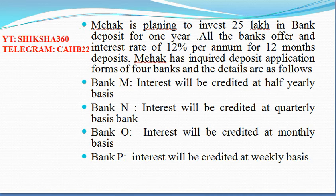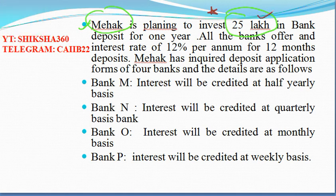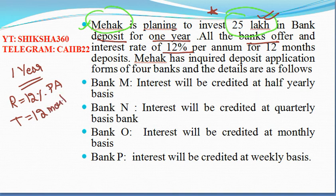The case study says that Mahek is planning to invest 25 lakh in a bank deposit for one year. All the banks offer an interest rate of 12 percent per annum, so rate is 12% per annum and time is 12 months. Mahek wants to earn maximum benefit, so she has inquired deposit application forms from four banks. The details of those four banks are as follows.